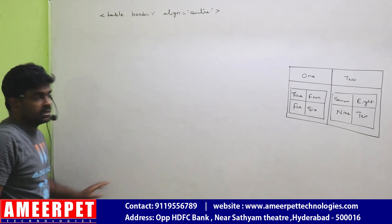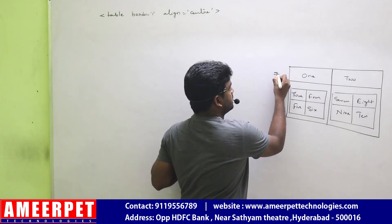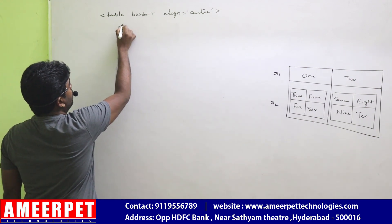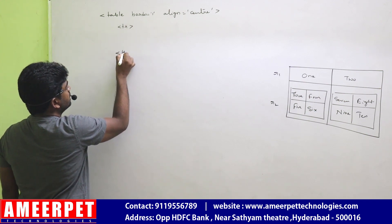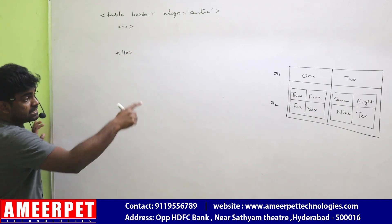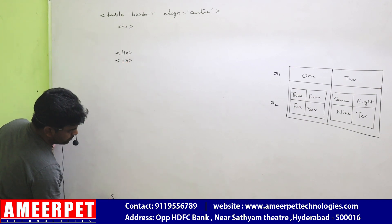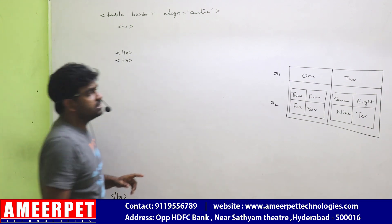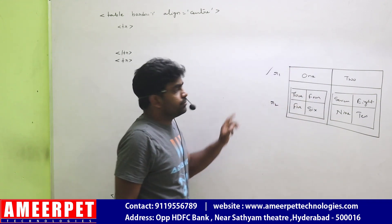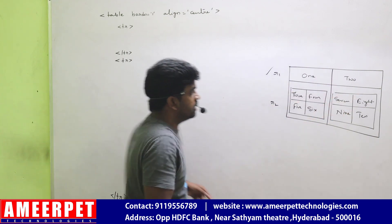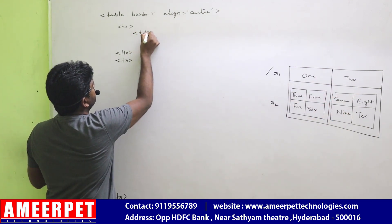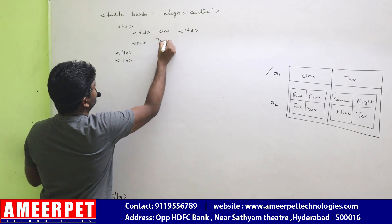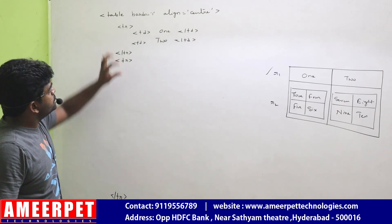This table represents the outer table. How many rows are present in the outer table? Two rows are present. The first row is very small, so I am representing it with TR start and TR end. The second row consists of tables, so TR start and TR end. The first row contains two columns — TD with value 1, TD closed, and TD with value 2, TD closed. The first row is completed.